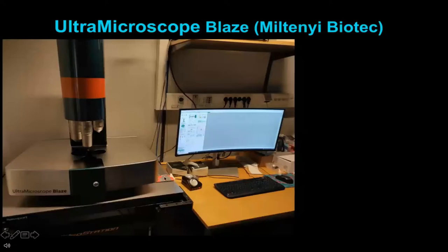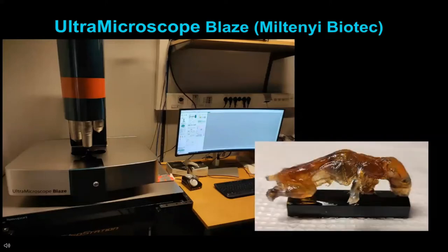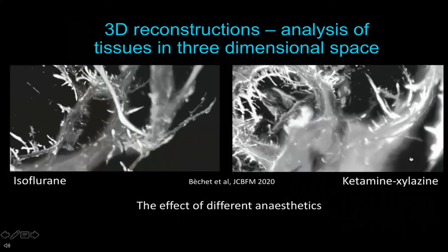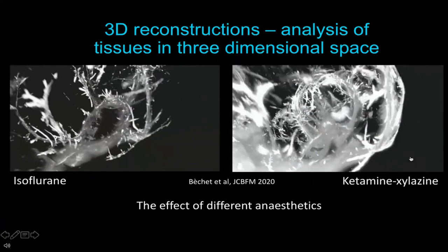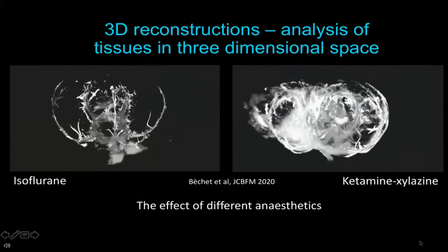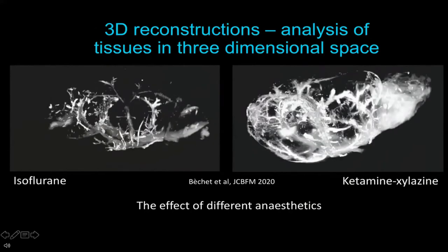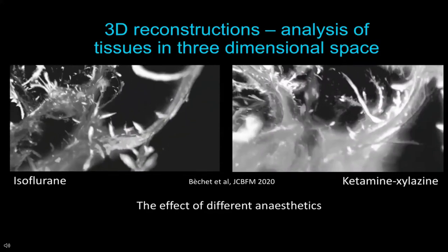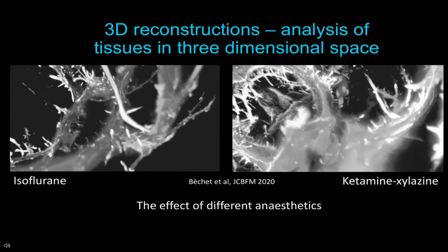This is one of the very new microscopes—the UltraMicroscope Blaze—that we're very happy with. Here you see our beautifully cleared mice; in air they look like this, and when immersed in fluid they become even more transparent. When we first set up the technique, we were using the previous version, the UltraMicroscope 2.